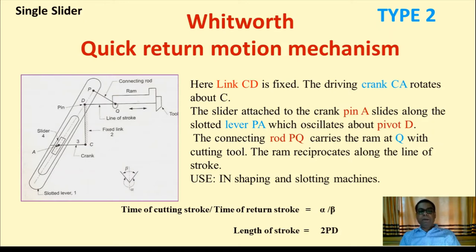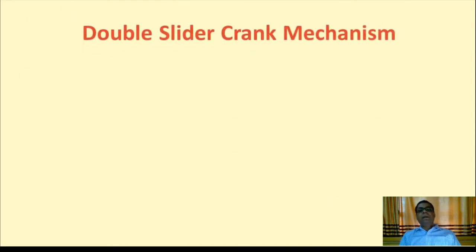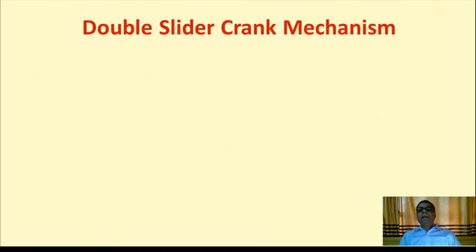The time of cutting stroke divided by time of return stroke equals alpha by beta. The length of stroke equals 2 × PD, where P and D are points connected to the connecting rod and the slotted lever, and D is a pin. The distance between P and D is crucial to finding the length of the stroke.